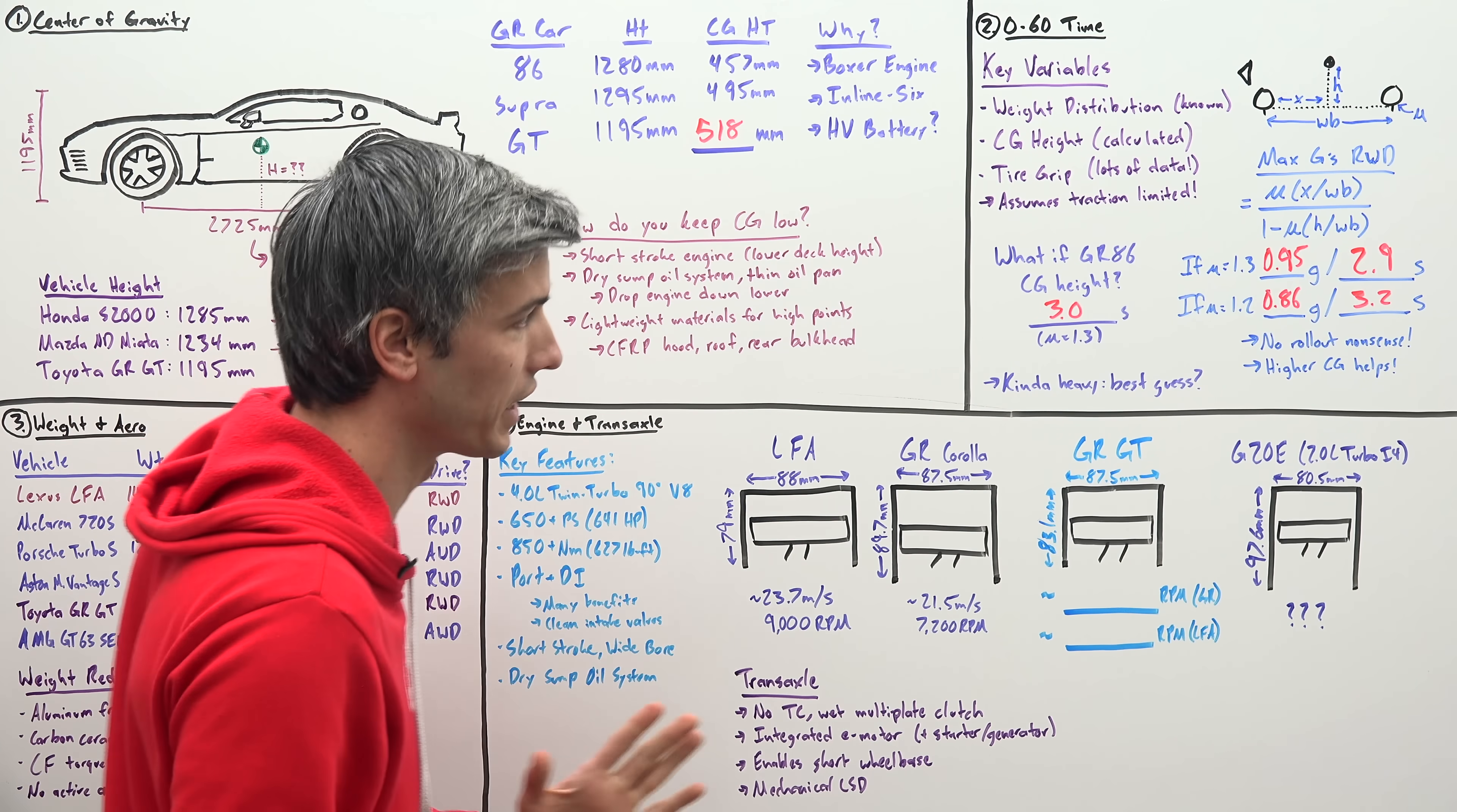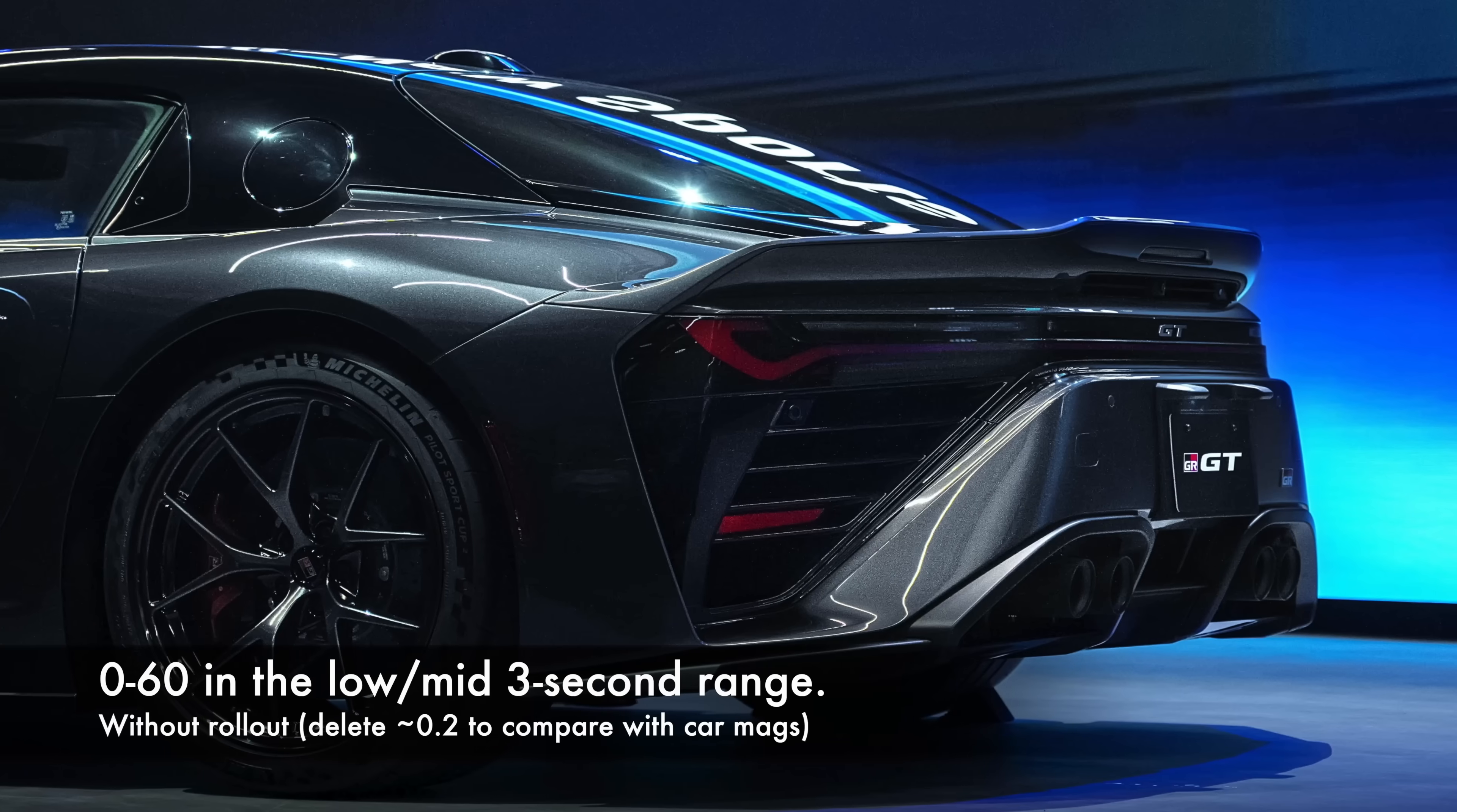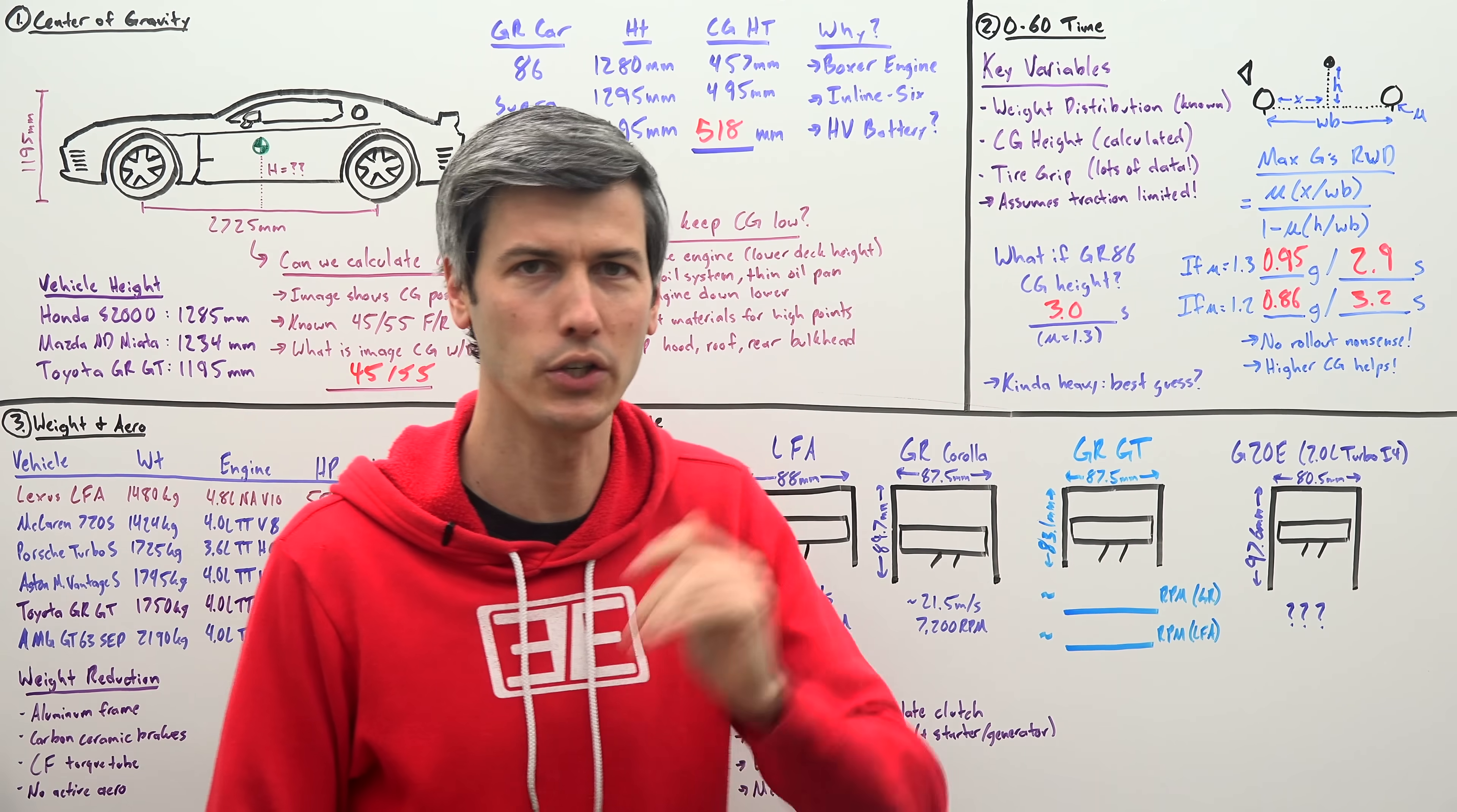Now, truthfully, my best guess, where is the 0 to 60 of this thing going to fall? Probably in the low to mid threes because it is fairly heavy and it doesn't have an extraordinary amount of power. So I think realistically, we're looking at low to mid threes. Now, there will likely be higher performance versions of this released over time, right? So I wouldn't be surprised to see that happen. And if so, have that 0 to 60 time dip into the high twos.